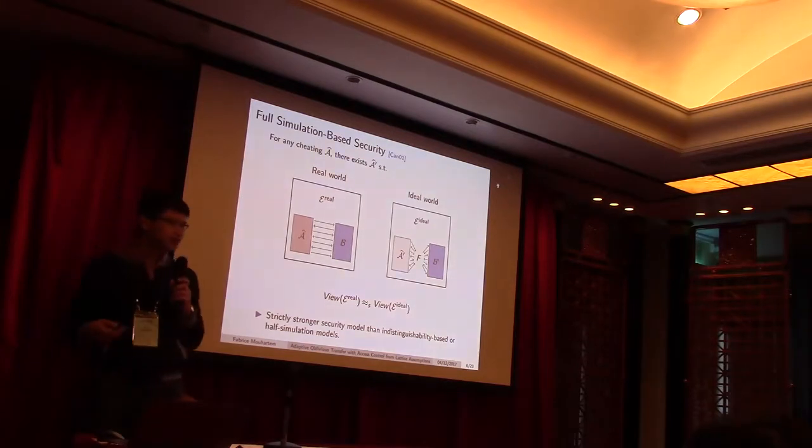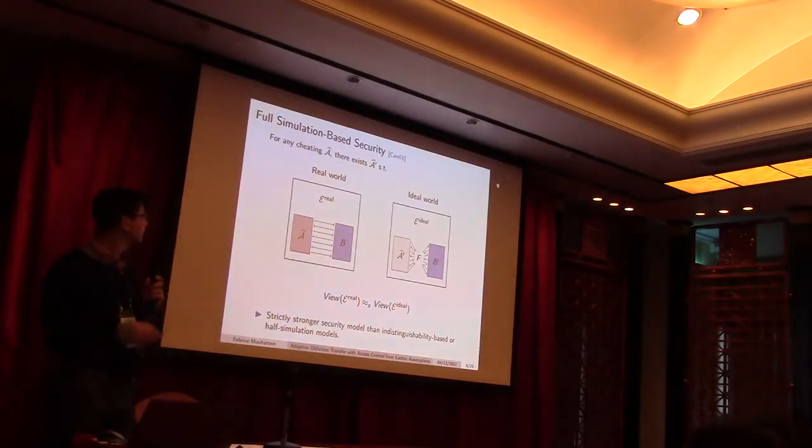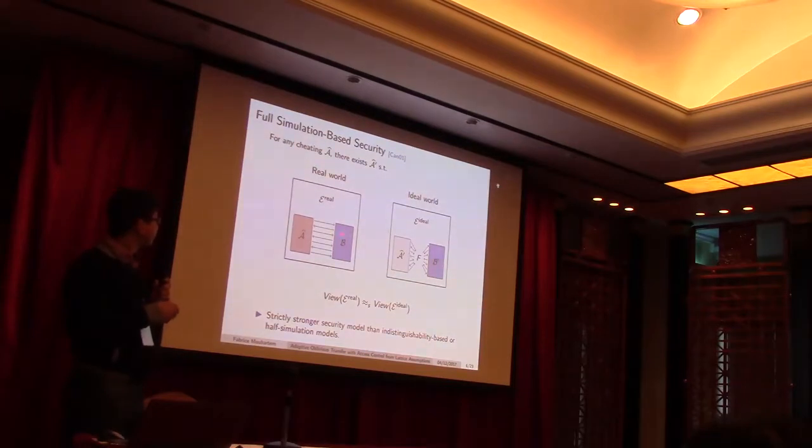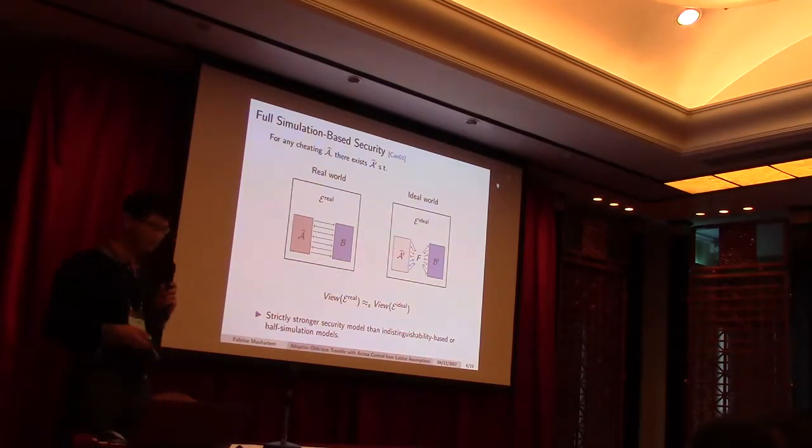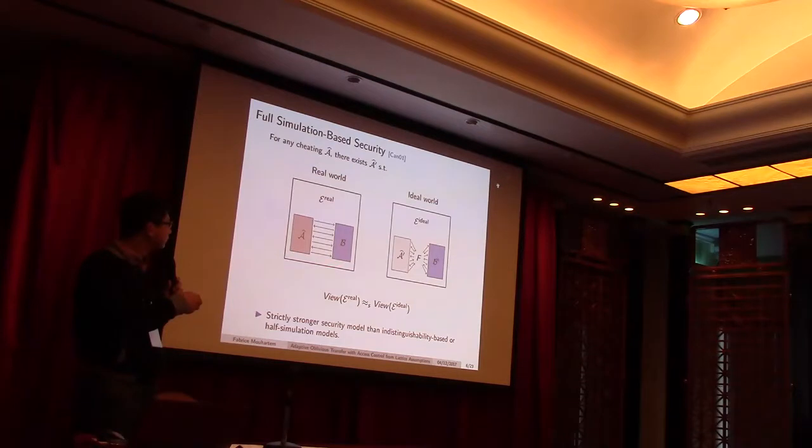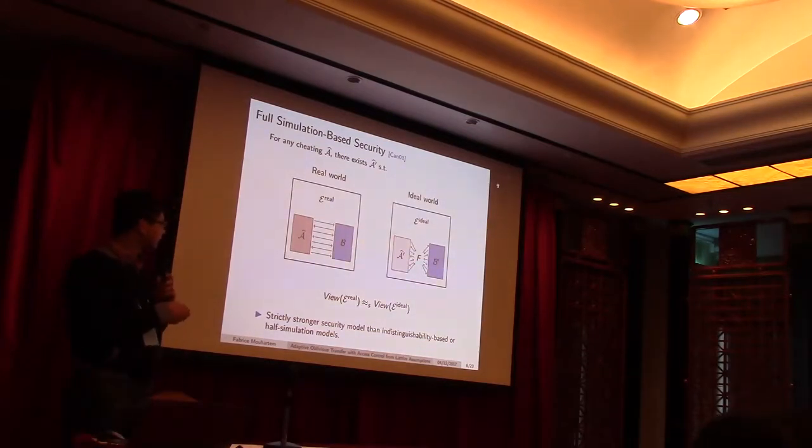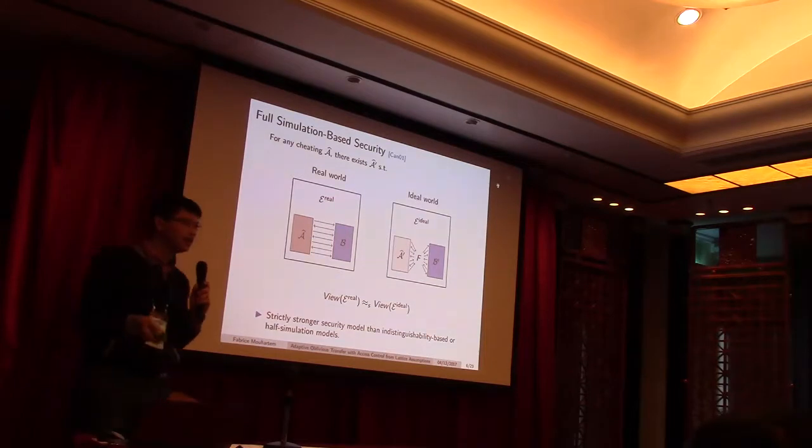Which are two standard and well-known lattice assumptions, where short integer solution is solving a linear system, and you find a small integer solution for this linear system, non-zero. And learning with error is indistinguishability of distribution with respect to the uniform distribution. So, as I said, our scheme is provably secure in the full simulation setting. So, what is it? It's a variant of the universal composability model.